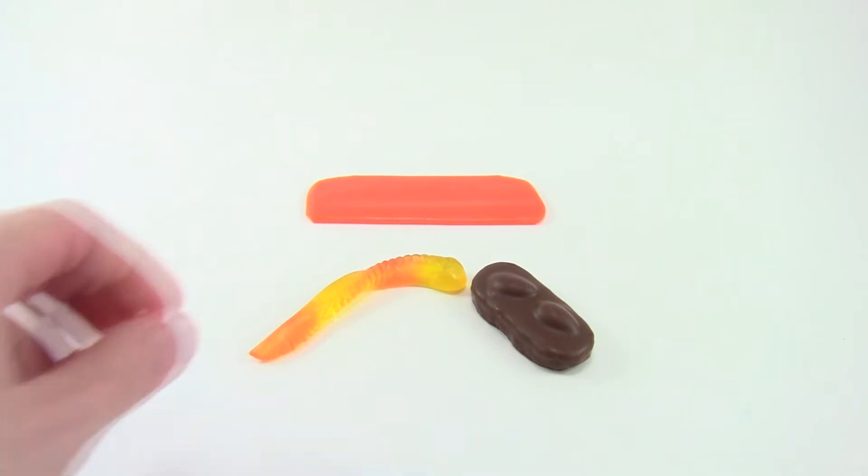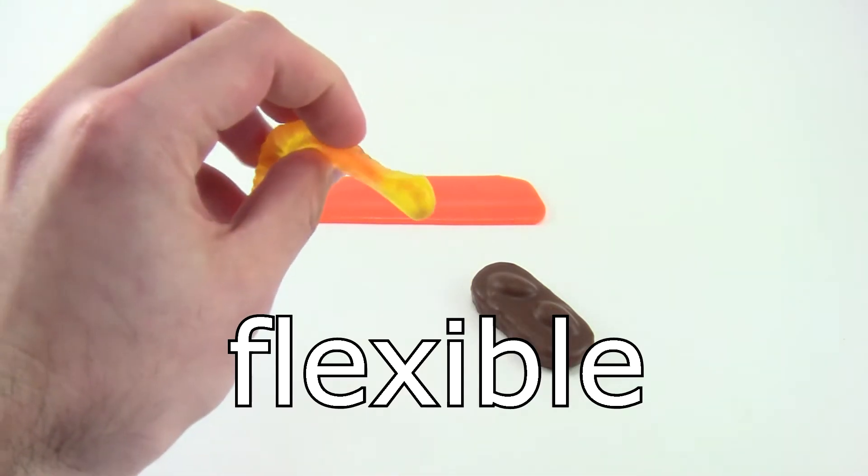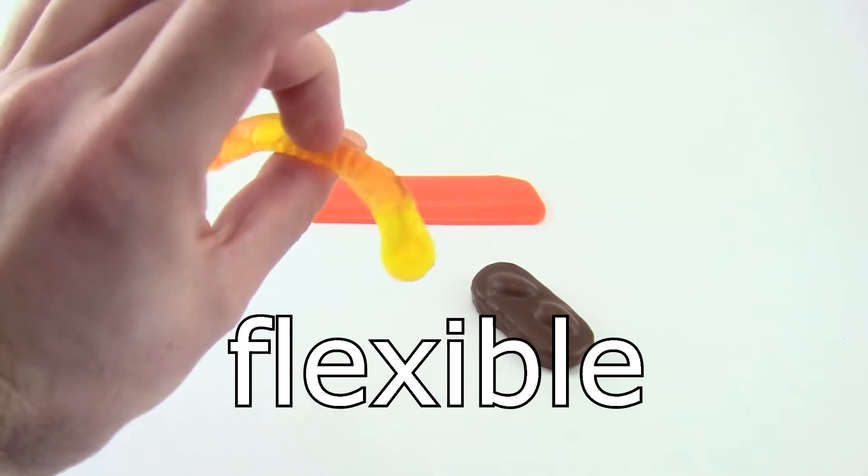You've probably noticed when handling different foods, like this gummy worm, that some of them are very flexible. They bend under their own weight and don't hold their shape very well.